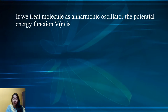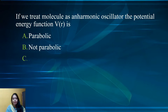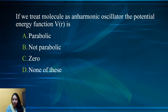The next question is: we treat a molecule as an anharmonic oscillator. The potential energy function V(R) is — parabolic, non-parabolic, zero, or none of these. For an anharmonic oscillator, the potential energy function V(R) is non-parabolic. So option B is the correct option.